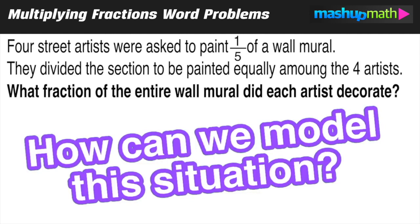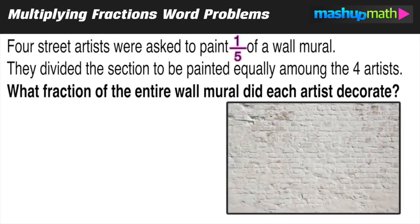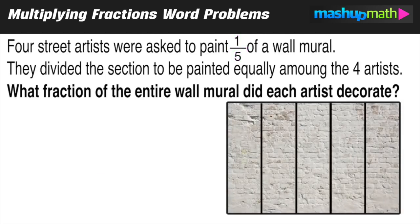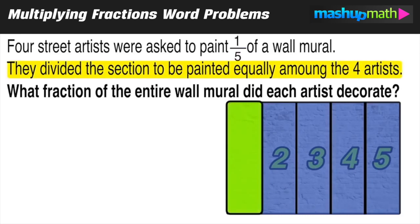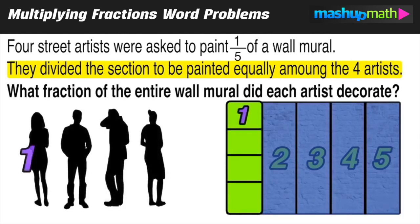If we can draw a diagram, we can better wrap our head around what's going on. We want to take our thinking and put it down on paper. Let's start by imagining our wall, which we are going to paint a mural on. These four artists are only painting one-fifth of the mural, so we split the wall into five equal sections. Four of those sections are off limits — we only care about one-fifth of the whole mural. Out of that one-fifth, the four artists are dividing it equally, so we cut that one-fifth section into four equal parts.